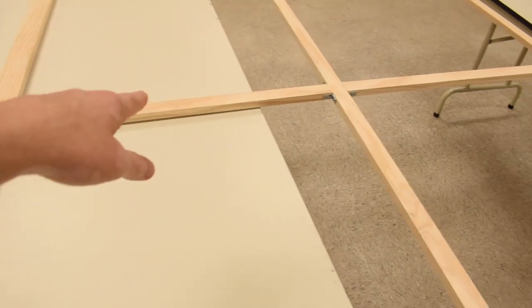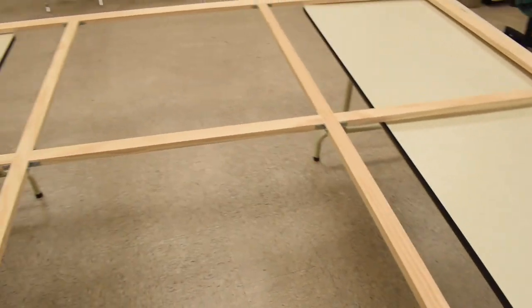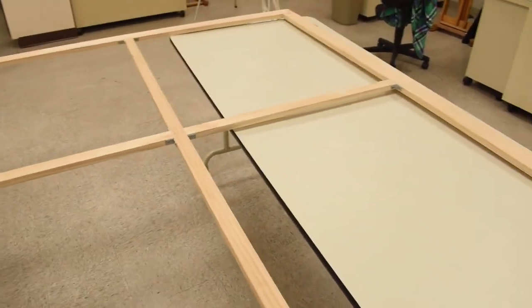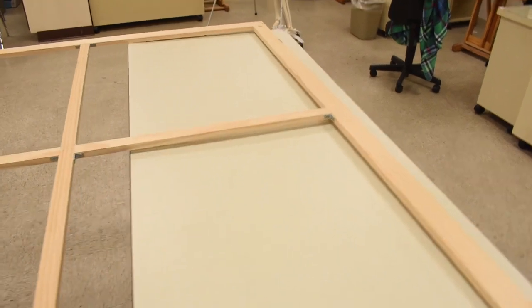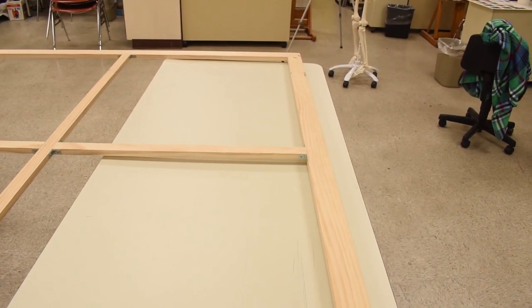And then right down the middle I have these separate pieces. There's one there, one there, one there. And so that's just along the center to add some more support. And then I'll flip it over and show you some things I did on the front side of the stretcher frame to prep it for the canvas.